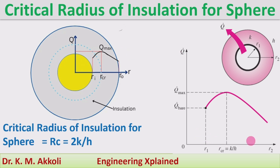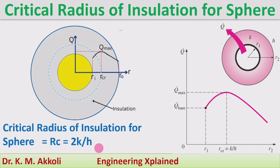That can be plotted as well. On the bare wire or tube, it gives a certain rate of heat transfer, and with the addition of insulation the rate of heat transfer goes on increasing, reaching a maximum at R_cr, the critical thickness. The critical radius of insulation for the sphere can be given as 2k/h, and how this expression is obtained will be derived further.